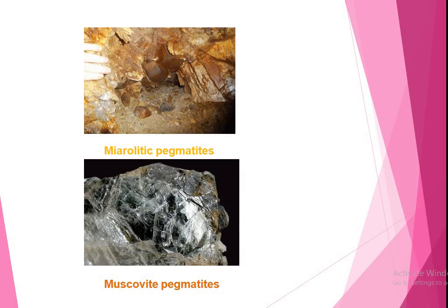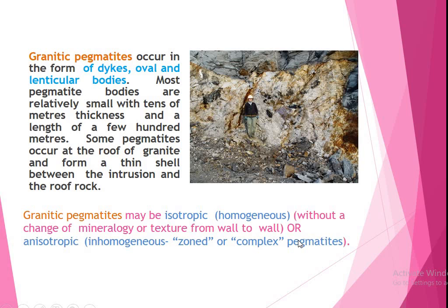This is the picture of miarolitic pegmatite and here this is the muscovite pegmatite. Granitic pegmatites occur in the form of dikes, oval and lenticular bodies. Most pegmatite bodies are relatively small, with tens of meters thickness and a length of a few hundred meters.